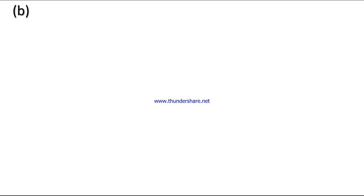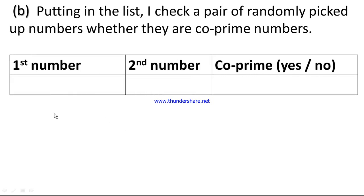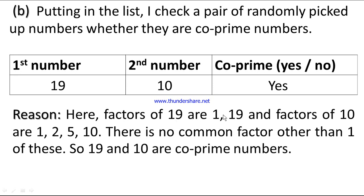Answer to question number b. Putting in the list I check a pair of randomly picked up numbers whether they are co-prime numbers. First number is 19 and second number is 10, and these two numbers are co-prime number, yes. Reason: here factors of 19 are 1 and 19 and factors of 10 are 1, 2, 5, and 10. There is no common factor other than 1 of these, so 19 and 10 are co-prime numbers.